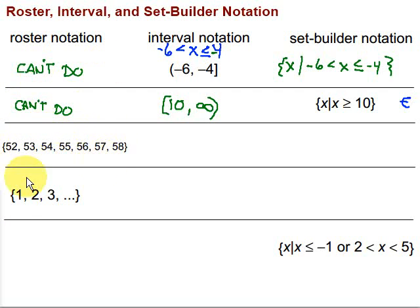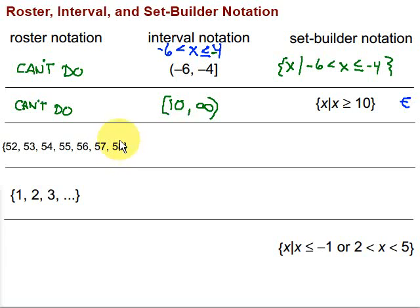Next, we have the roster set: 52, 53, 54, 55, 56, 57, and 58. Can I write this in interval notation? No — any chunk on the number line that includes these numbers would also include a bunch of numbers in between them, like decimals. So I can't write it in interval notation.